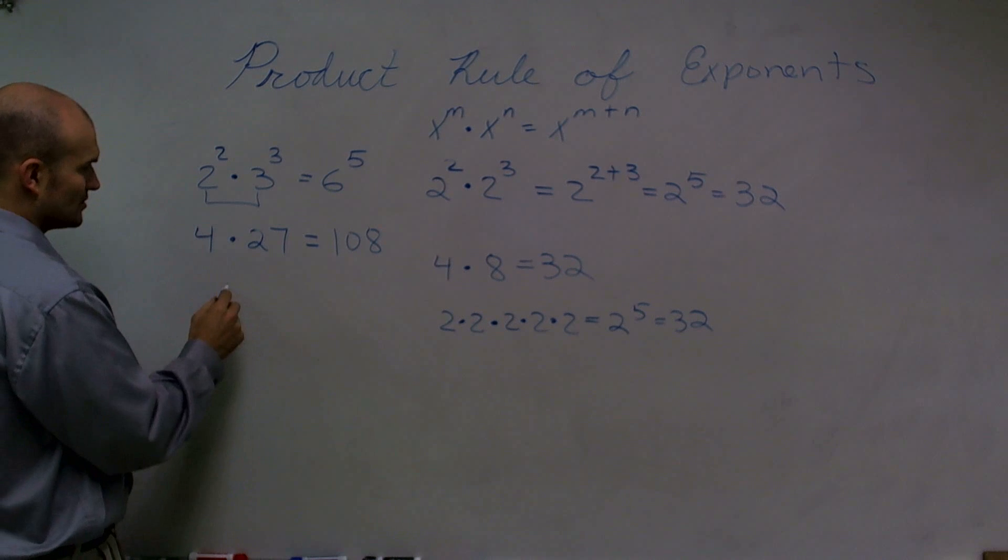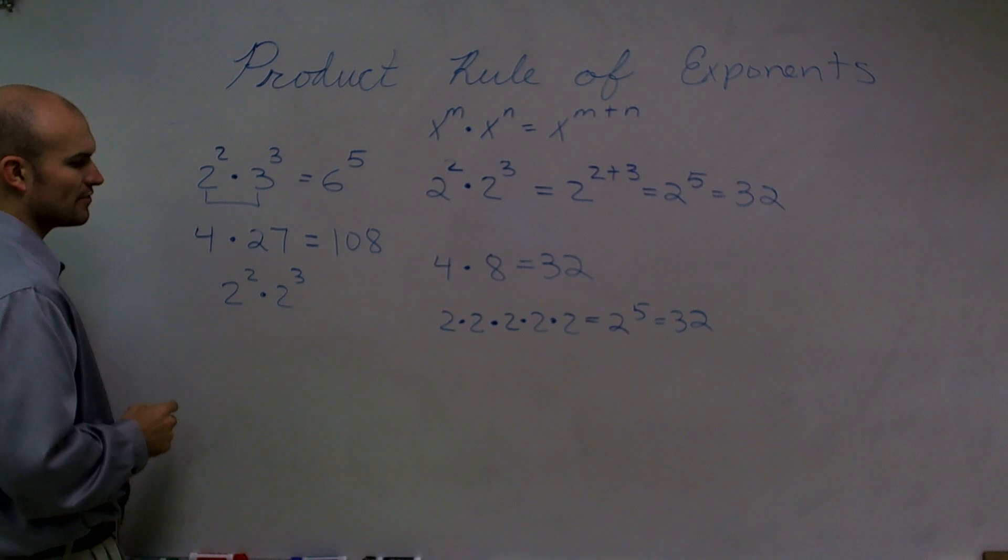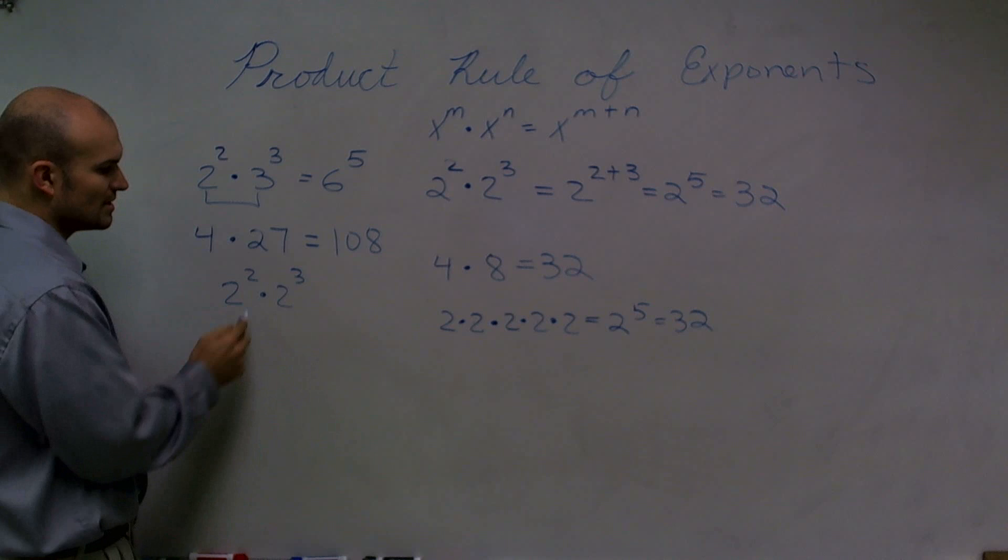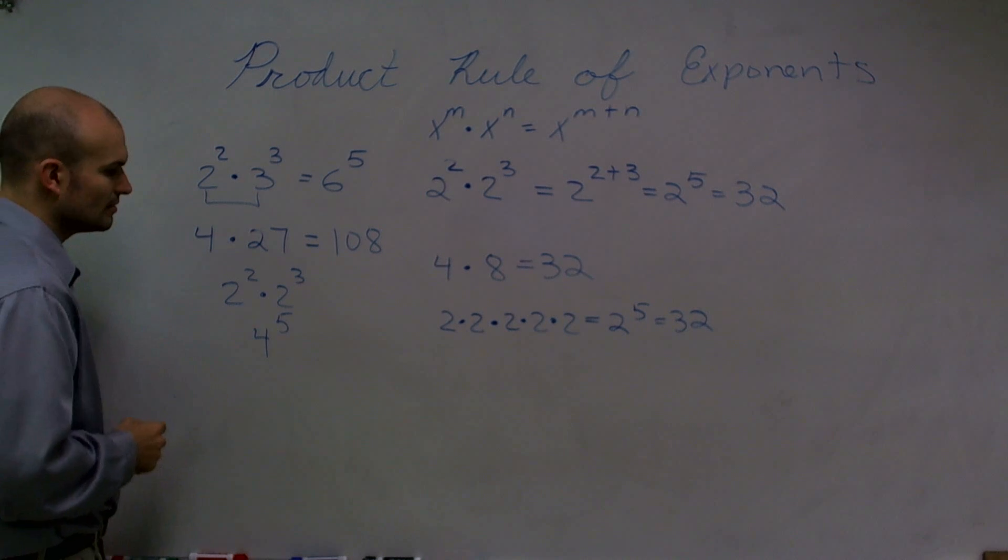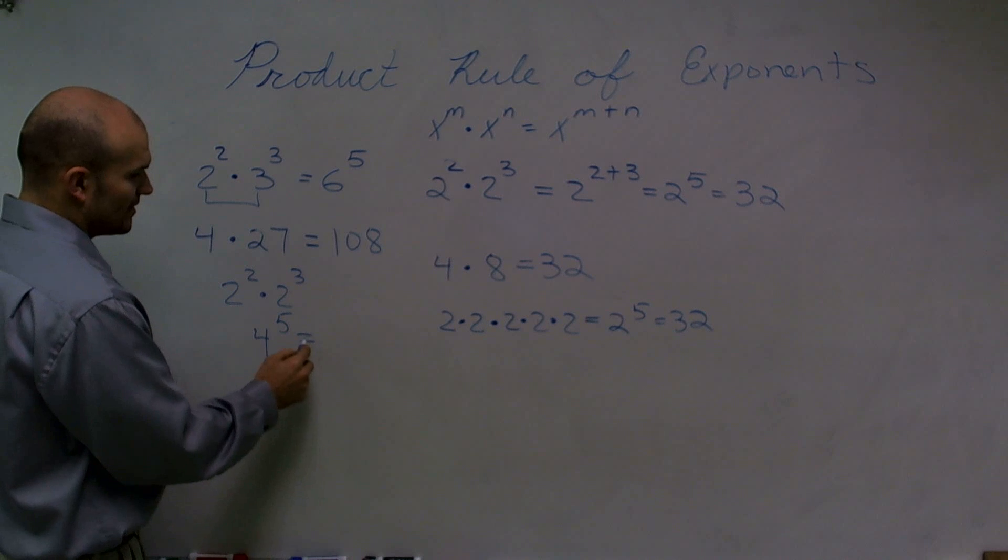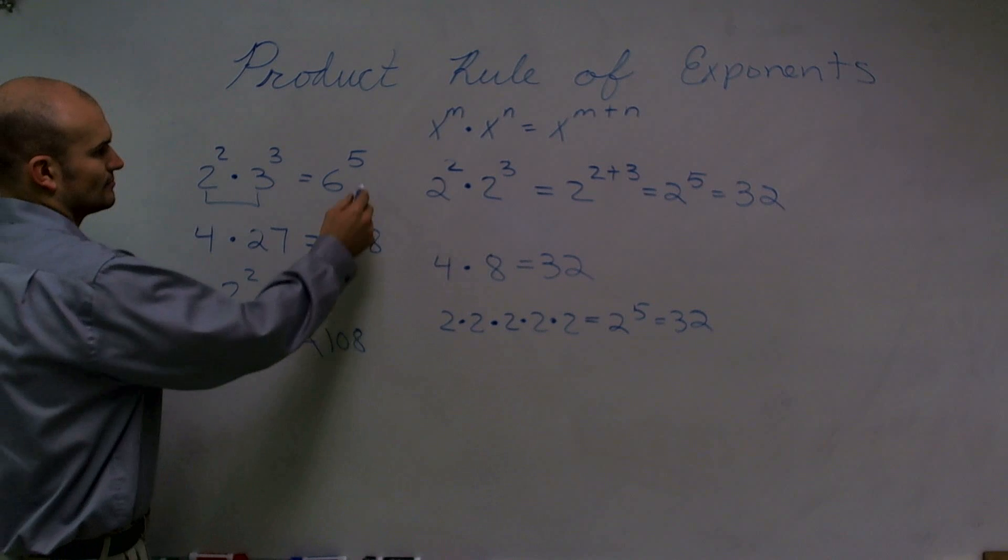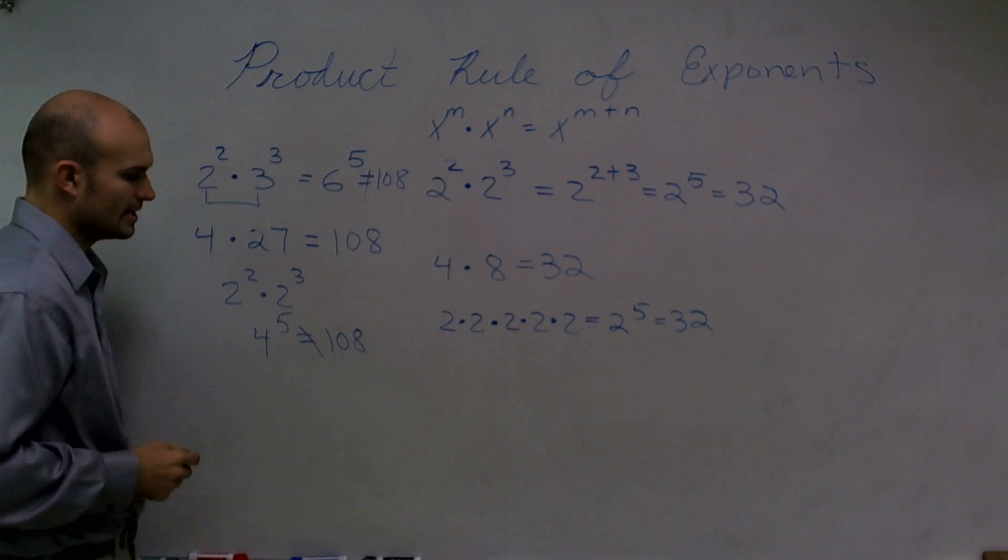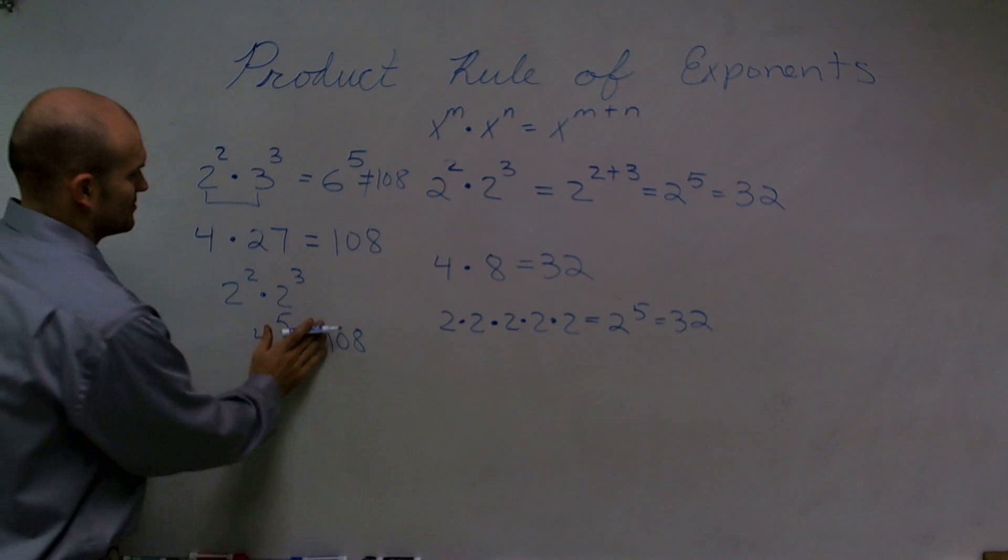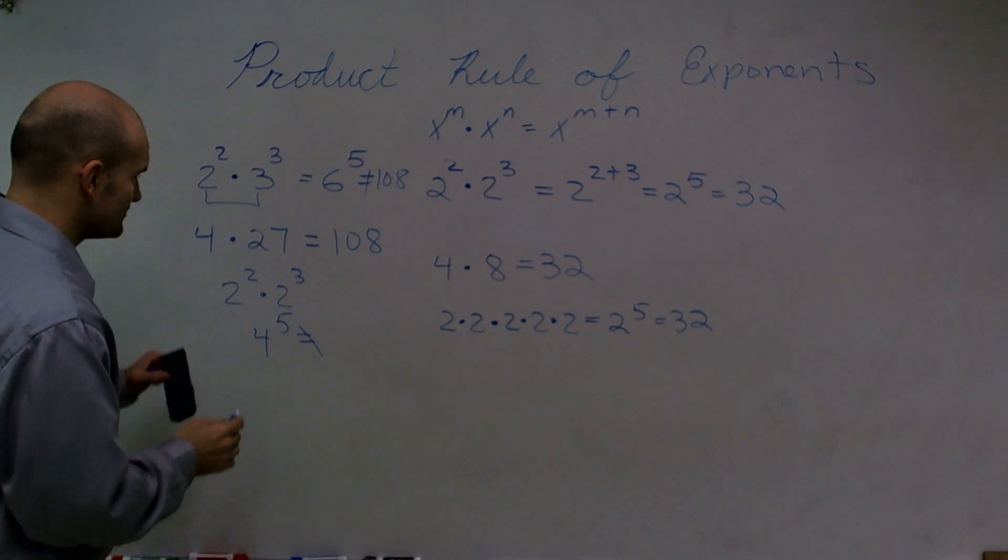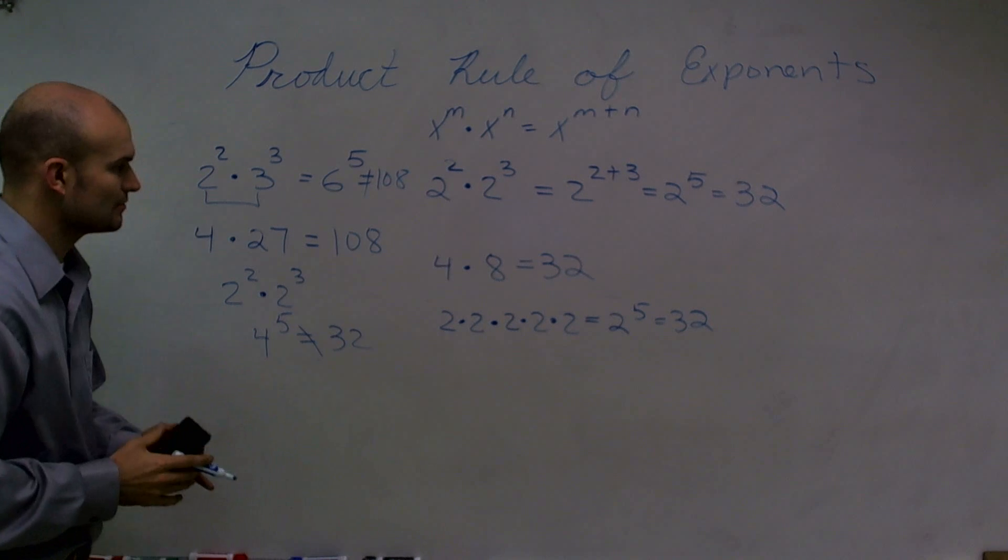Now, the second thing that also doesn't work is you can't multiply those numbers. So if I had 2 cubed times 2 to the third, or 2 squared times 2 to the cube, a lot of students want to say, oh, it's 4 to the fifth power. Well, again, I know that 4 to the fifth power does not equal 108. But 2 squared plus 2 is supposed to equal 32, right? It does not equal 32.